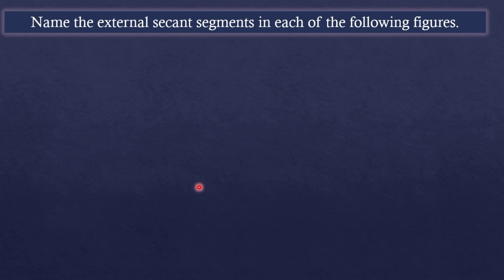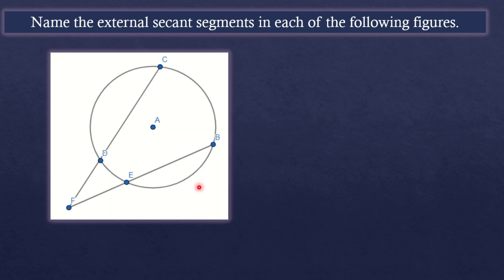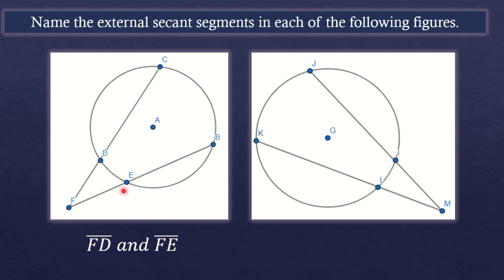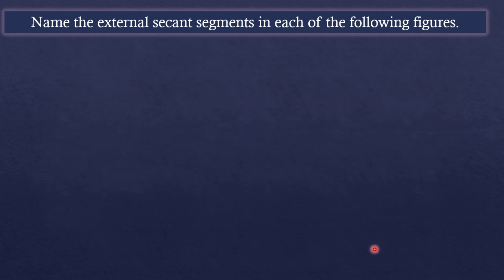For example, name the external secant segments in each of the following figures. In the first illustration, the external secant segments are line segment FD and line segment FE. In the next figure, the external secant segments are line segment ML and line segment MI.